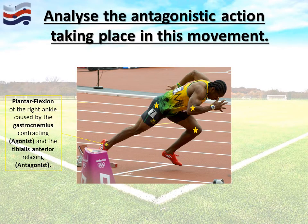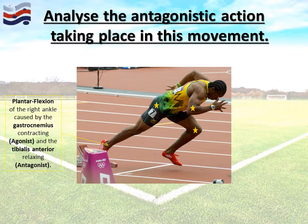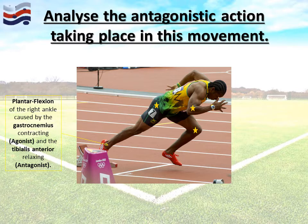Let's analyse what we've learned and apply it to a spotting image. Looking at the athlete's right ankle as an example: plantar flexion is occurring because the gastrocnemius has contracted, making the toe point downwards, and the tibialis anterior is relaxing, making it the antagonist. Pause the video and see if you can identify the right hip, the left knee, and the right elbow.